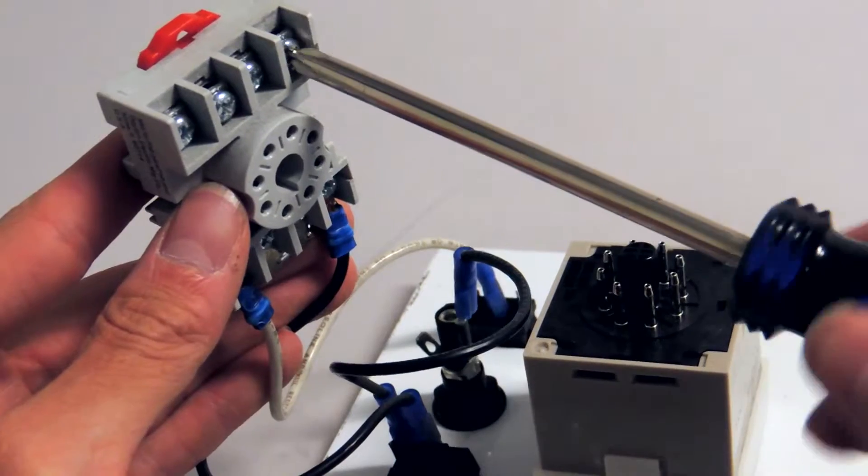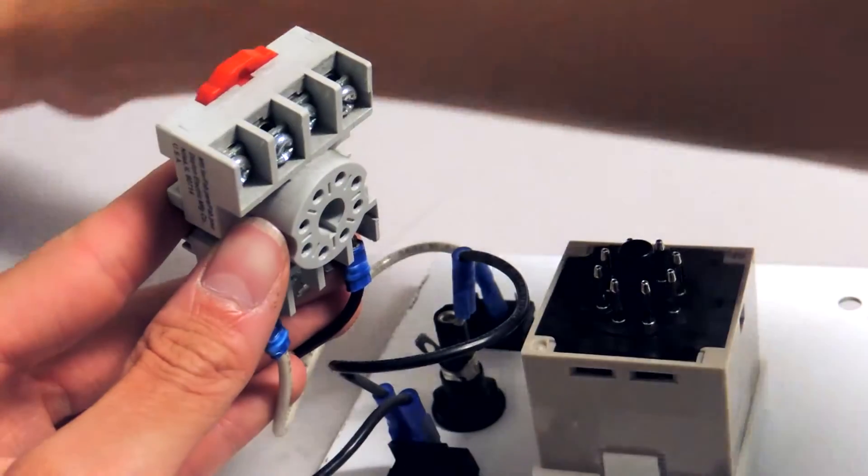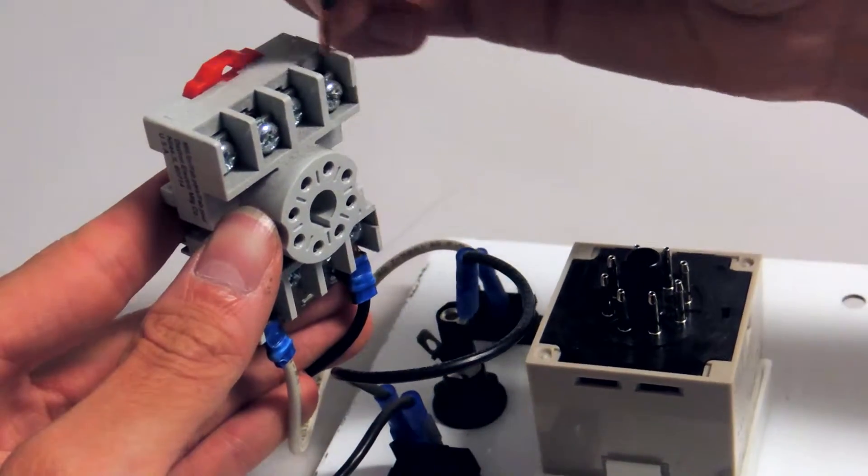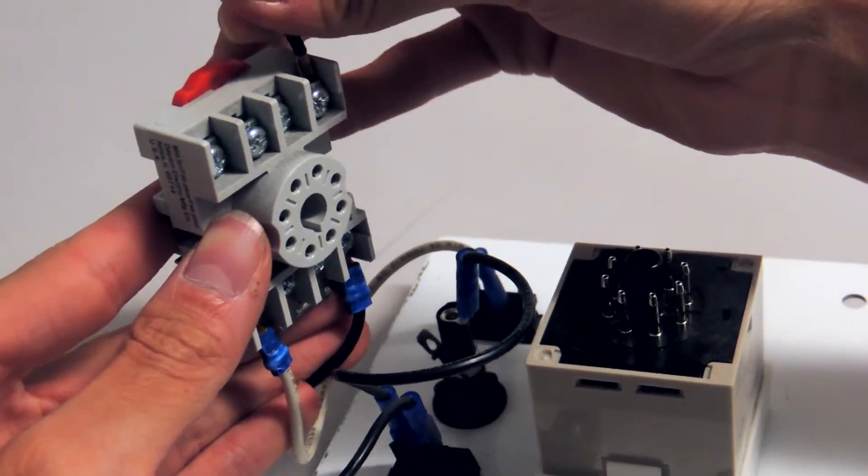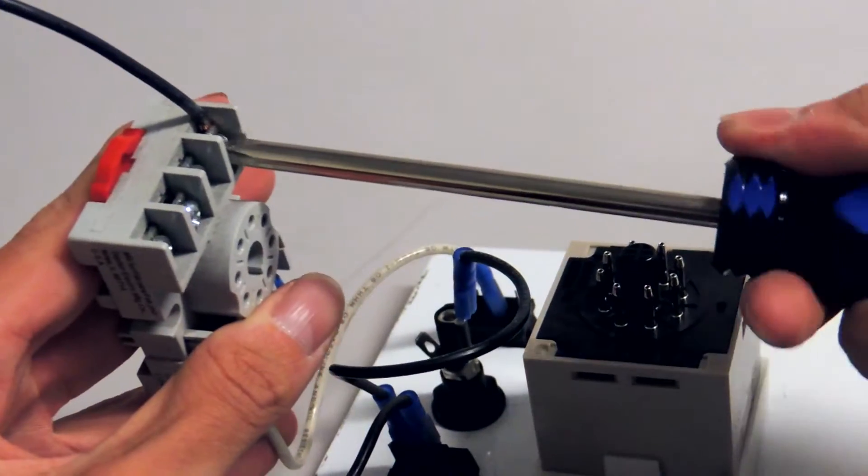Connect the black wire to port number three. To do this, loosen the screw and place the wire underneath the plate, then tighten the screw to secure the wire.